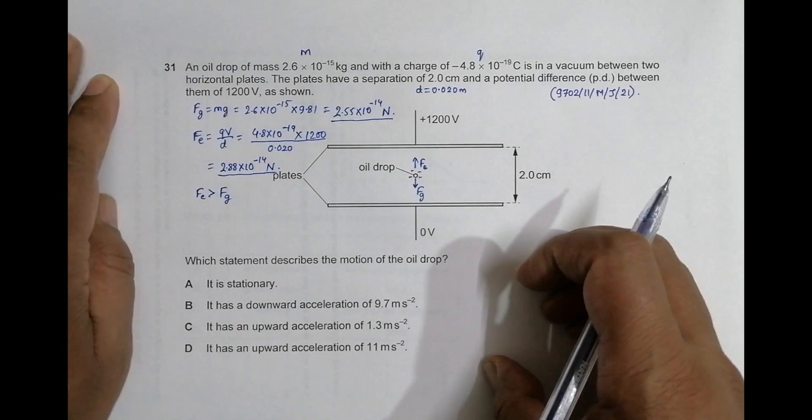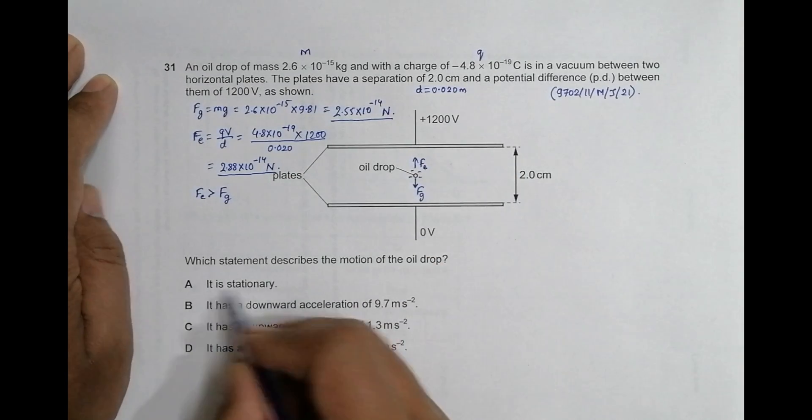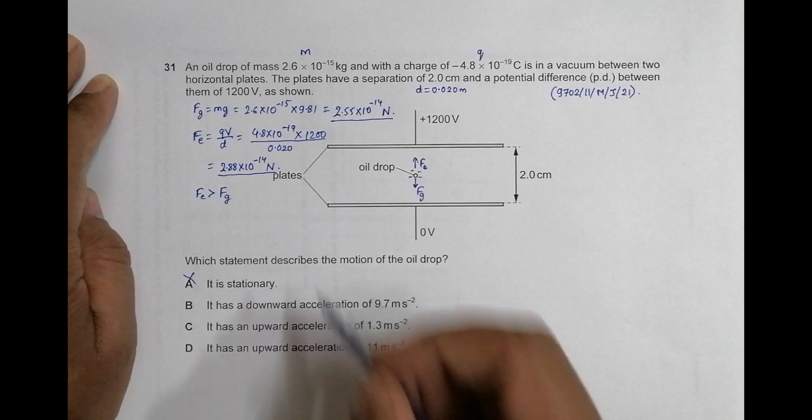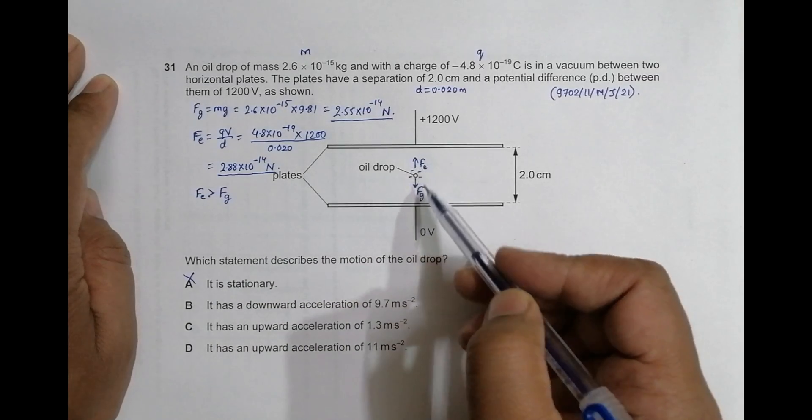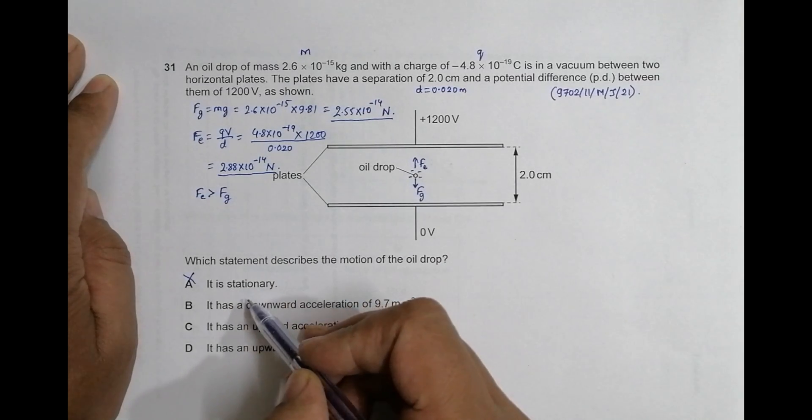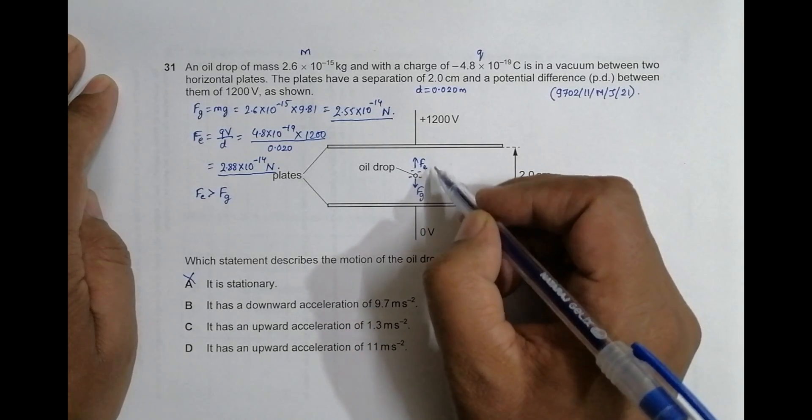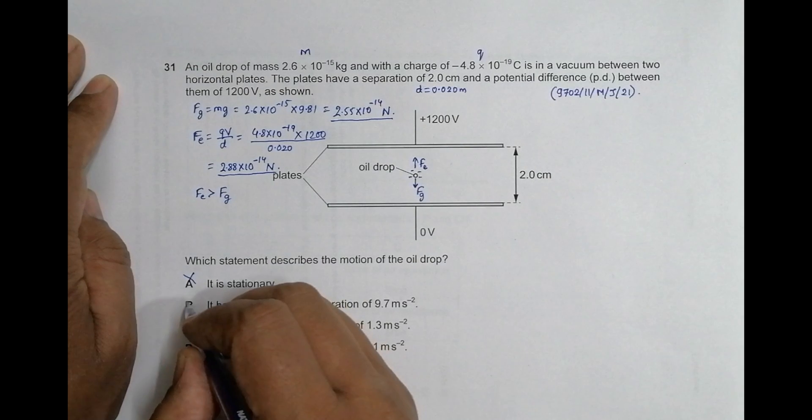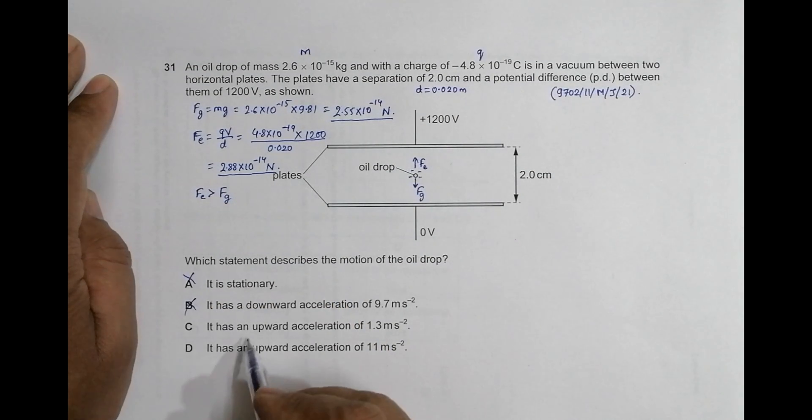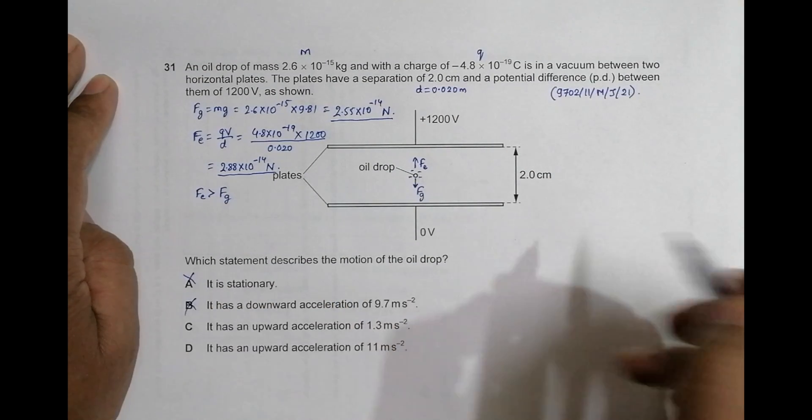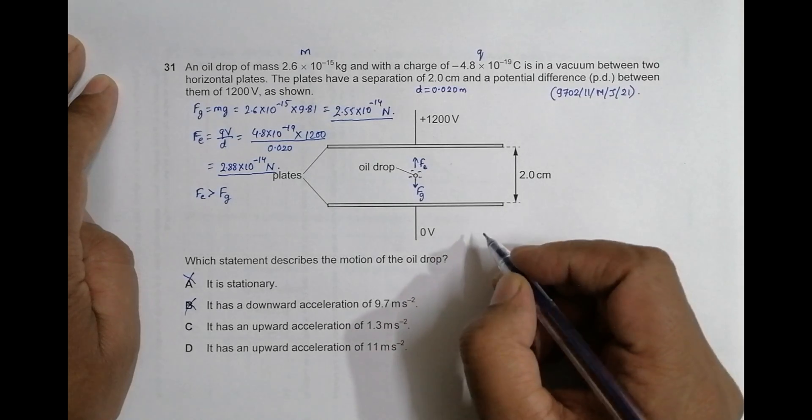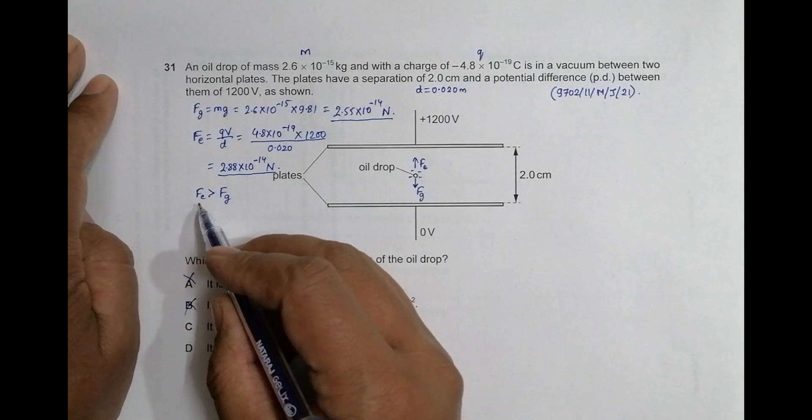Is it stationary? No, it is wrong because since the forces are not equal, it can't be stationary. It has downward acceleration? No, it's also not true because FE is more than FG, so there should be upward acceleration. Now we have to choose between these two. Since FE is more, the resultant acceleration will be in the direction of FE.